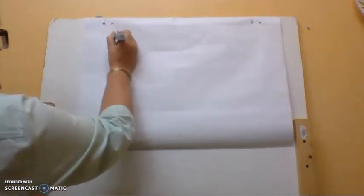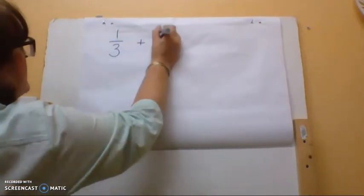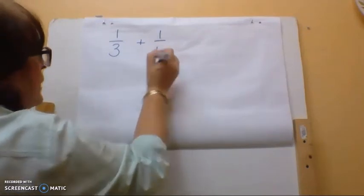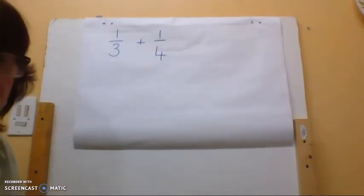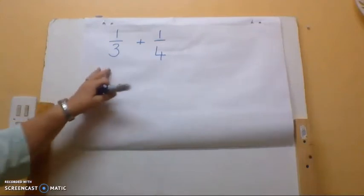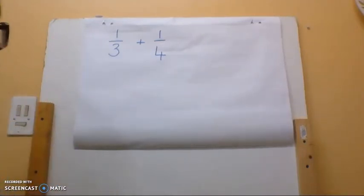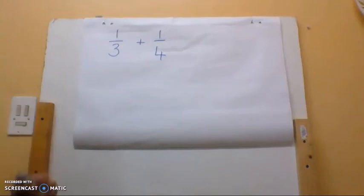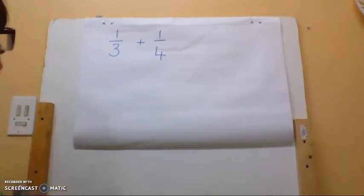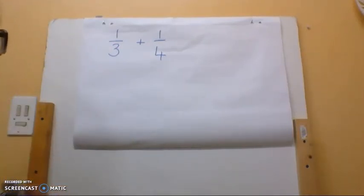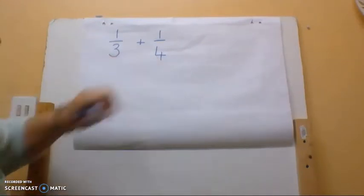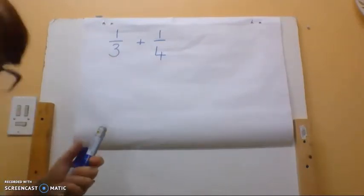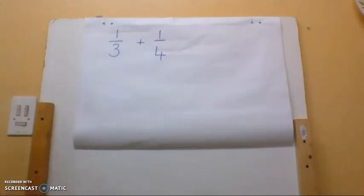The first one we are going to look at is a third plus a quarter. In the past we have looked at fractions when the denominators are a multiple of the other one and we only ended up changing one of them into the equivalent fraction. Now what we need to do here — if we're going to add a third and a quarter, we cannot add them as they stand. The denominators are not the same, so we're going to have to look for the lowest common denominator.